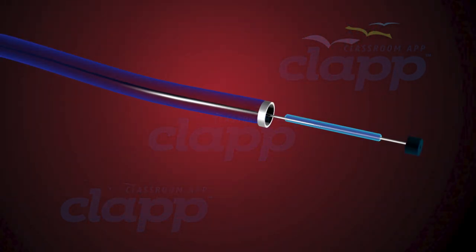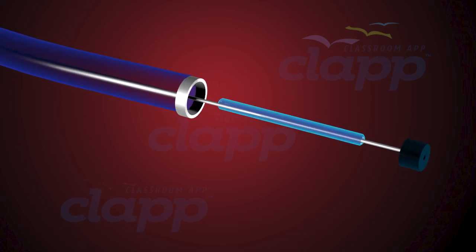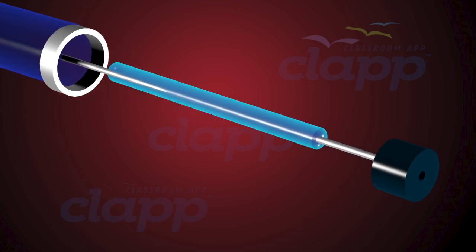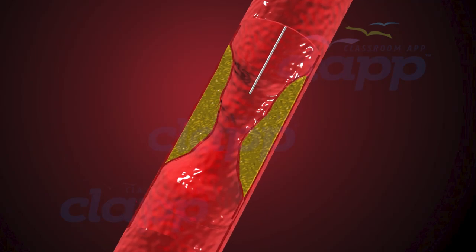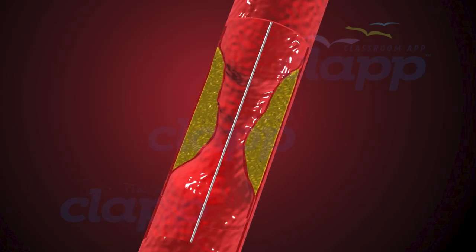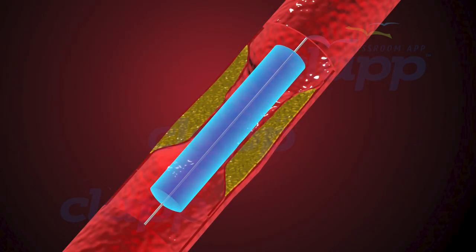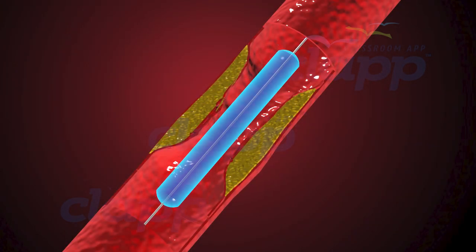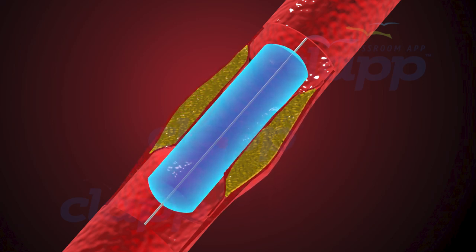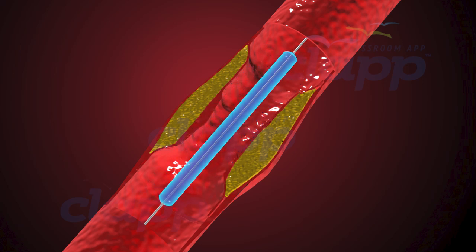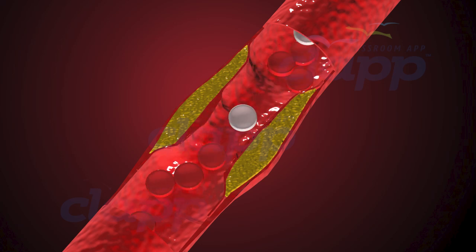The balloon catheter is a fundamental tool in angioplasty. It consists of a thin tube with an inflatable balloon at its tip, carefully positioned within the narrowed artery. Once the guiding catheter is in place, a balloon catheter is advanced to the targeted area. With utmost precision, the balloon is gently inflated. This controlled inflation compresses the plaque against the artery walls, widening the vessel and restoring proper blood flow to the heart.